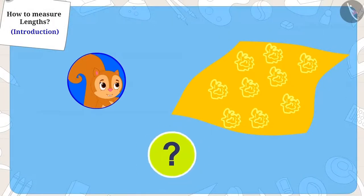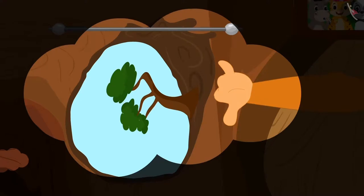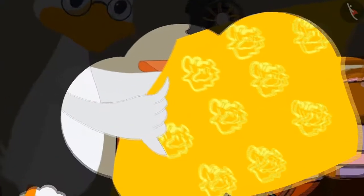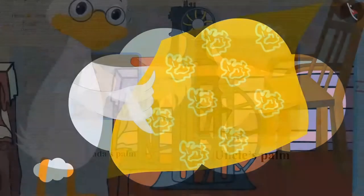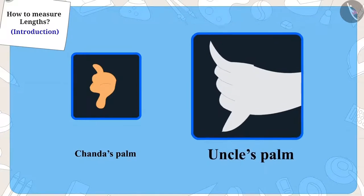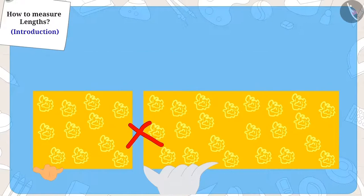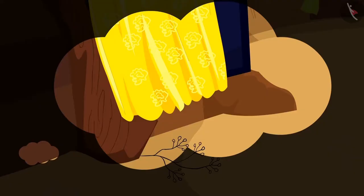Children, can you tell me why this happened? Yes, you are right. Chanda measured the window using her palms, and while giving the cloth, uncle had measured the cloth using his palms. Now Chanda's palms are so small and uncle's palms are so big. So will the length measured by both their palms be the same? No, that is why Chanda's window curtain reached the floor.